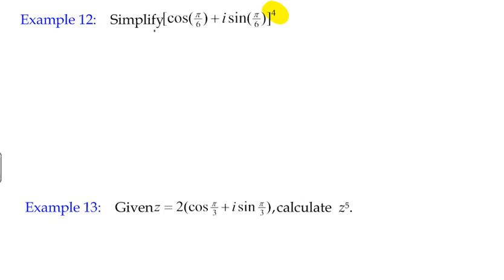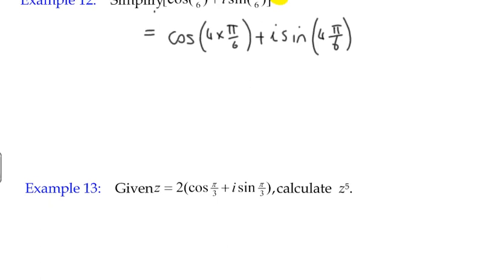So if we get cos π/6 plus i sine π/6 to the power of four, we could say that that's the equivalent of cos of four times π/6 plus i sine four times π/6. And we just need to work out what that is. Four π/6 is just two π/3, so we can simplify that to cos 2π/3 plus i sine 2π/3.